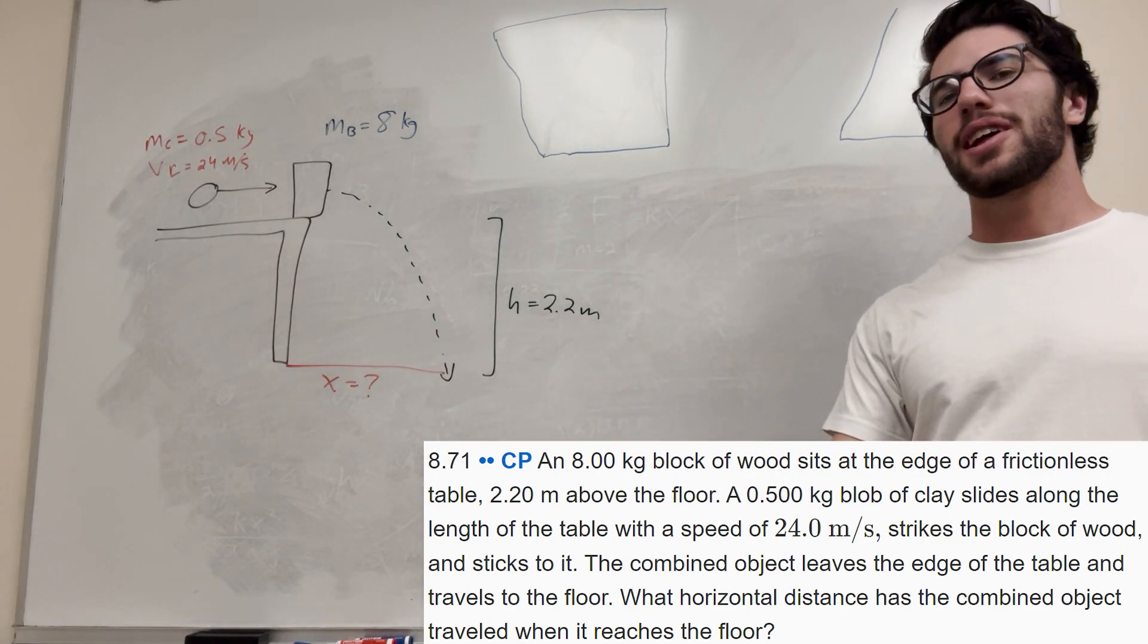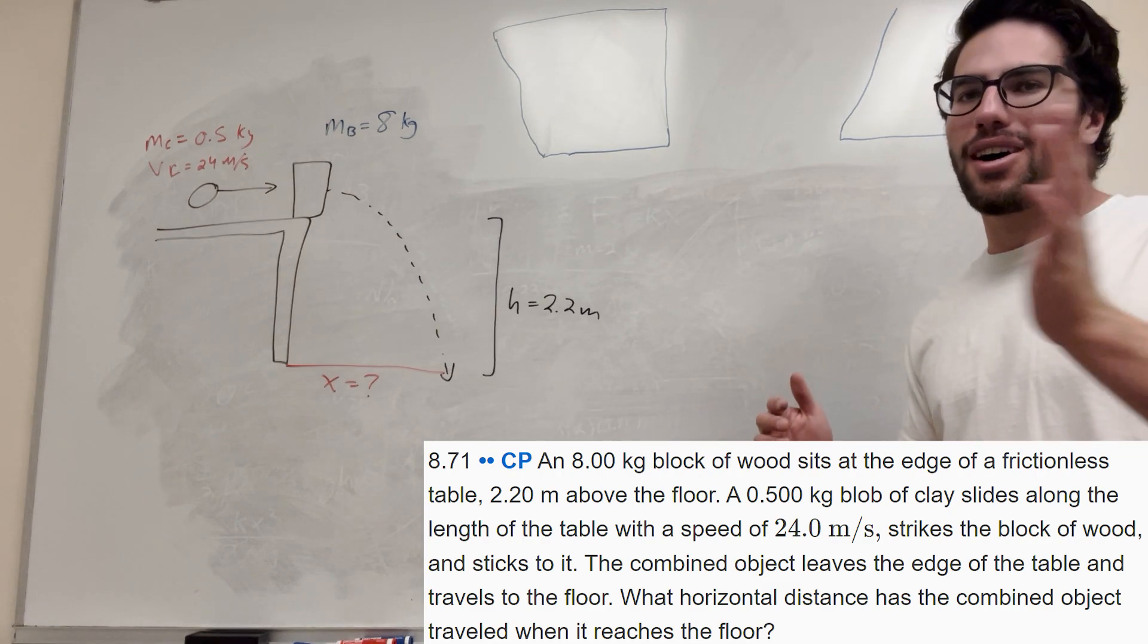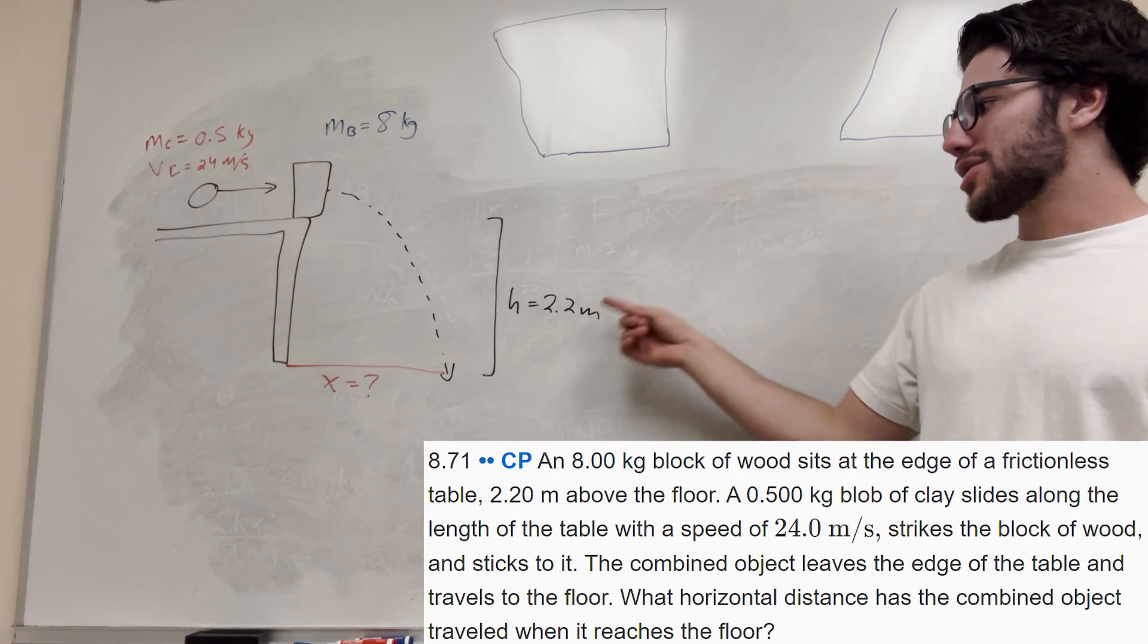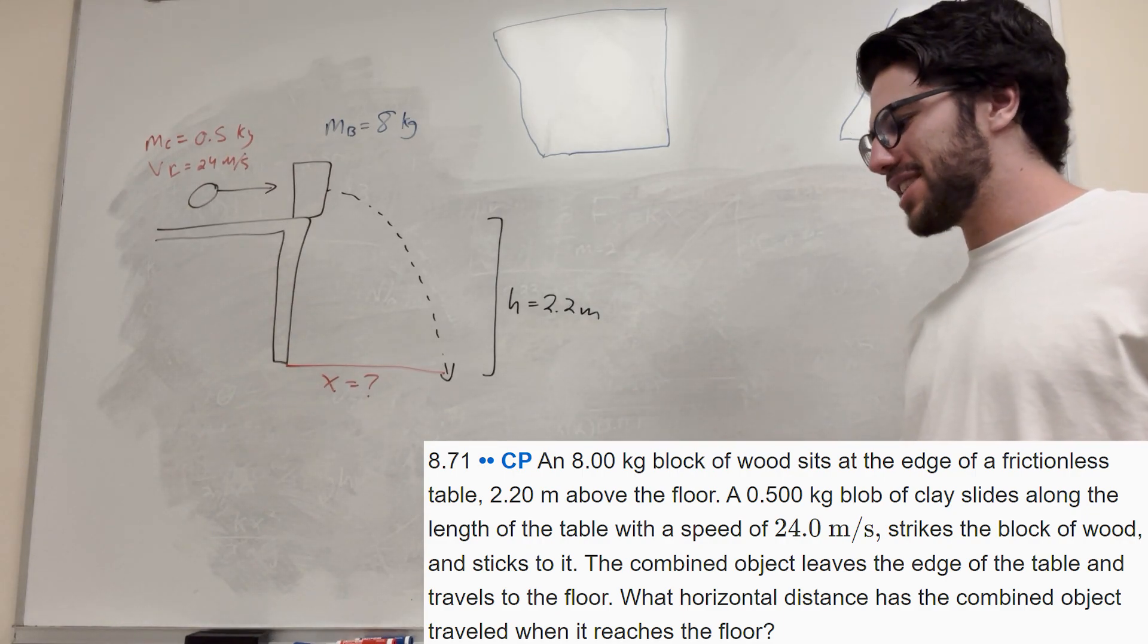We got a clay ball, and we're throwing this clay ball at a block of wood sitting on the end of a table. Basically, they're going to fly off the table together and fall 2.2 meters, and you're trying to find how far they go. There's a lot to consider in this question.